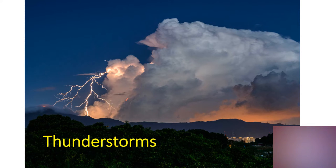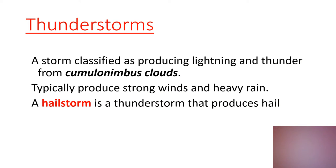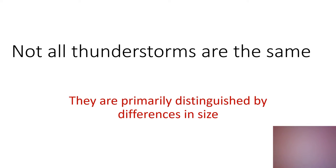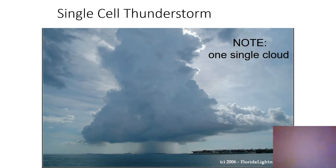Thunderstorms. A thunderstorm is a special type of storm — one that produces thunder and lightning. Thunderstorms always come from cumulonimbus clouds; that's the only type of cloud that can give us this kind of nasty weather producing thunder and lightning. A hailstorm is a thunderstorm that produces hail. Not all thunderstorms are the same — they are typically distinguished by their size.